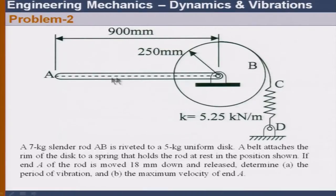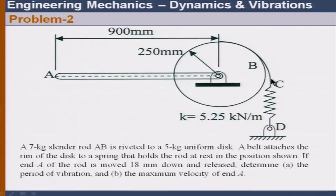Let us look at the tutorials. AB is a 7 kg cylinder load riveted to a 5 kg uniform disc. There is a fixity at this point — it is not hinged, otherwise the bar would collapse. A belt attaches the rim of the disc to a spring that holds the rod at rest. If the end A of the rod is moved 18 millimeters down and released, determine the period of vibration and the maximum velocity of end A.